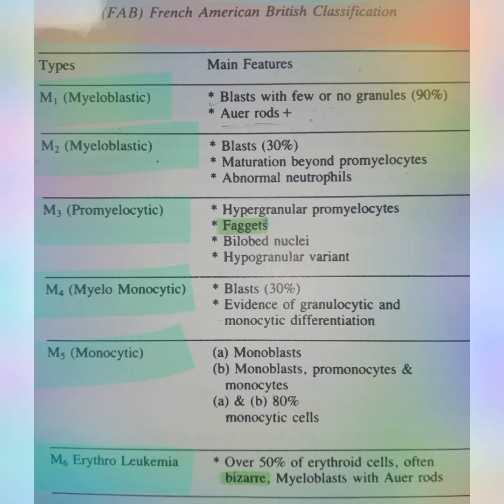Type 4 is myelomonocytic. In this you will see 30 percent blast cells, and there is some evidence of both granulocytic and monocytic differentiation. Leukocytes are mainly of two types - granulocytes and non-granulocytes. In granulocytes there are neutrophils, basophils, and eosinophils, and in non-granulocytes there are lymphocytes and monocytes. You will see evidence of differences between granulocytes and monocytes.